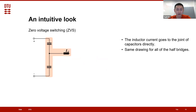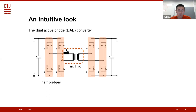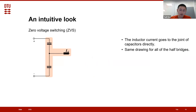The inductor current directly goes into the joint of the capacitors to charge and discharge them. If we look at all four half bridges, all of them will have an inductive element directly connected to their switching node. Therefore, this equivalent circuit is applicable to all four half bridges. In circuit terms, if we do not analyze in the time domain, all four half bridges will have identical conditions to achieve zero voltage switching.